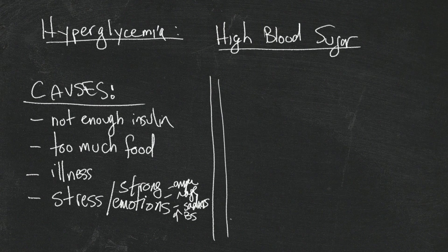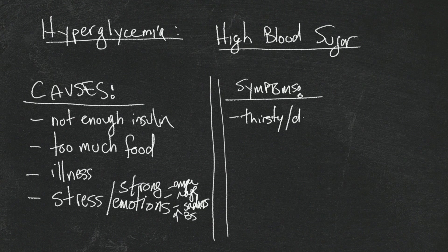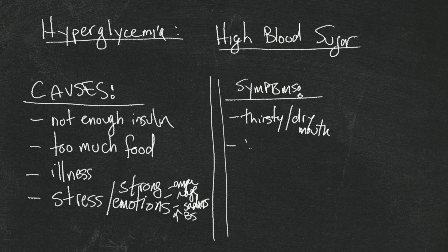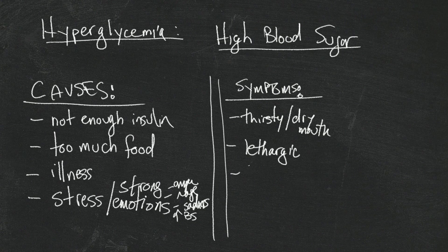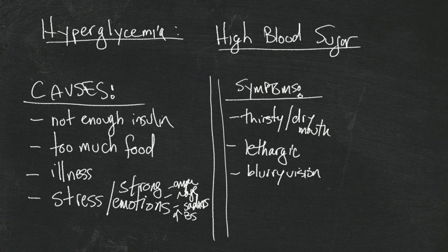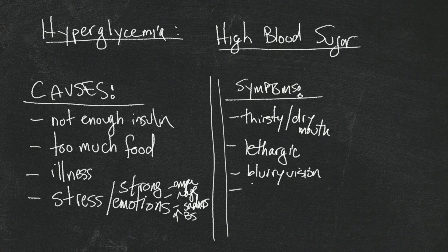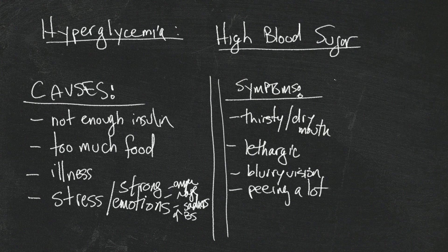What are some of the symptoms of high blood sugar? Well, they're similar to what you felt when you first got diagnosed when your blood sugars were really high. You can feel thirsty or dry mouth, you can feel lethargic - which you can also feel when your blood sugar is low, that's why it's important to check - you can have blurry vision. What ends up happening is that as your blood sugar goes up, it dilates things in your eyes in such a way that you could get a lot of blurry vision. Maybe peeing a lot because the body's trying to dump the extra sugar.